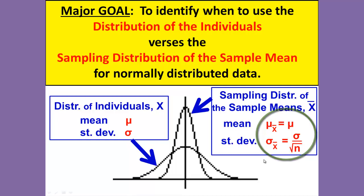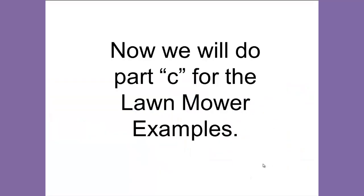Once we've determined which distribution we're using and identified our mean and standard deviation, we can work the problem as before when we first introduced normally distributed data and finding probabilities. In Part 2 we're looking at how to complete the full problem. In Part 1 we focused on how to determine whether it was an individual versus a sample mean; now we're going to look at how to work the problem once we've determined that.